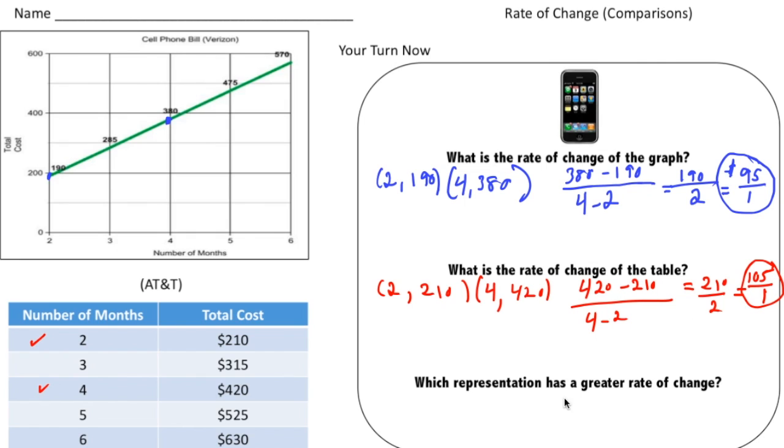According to our data, AT&T is a little more expensive than Verizon, so they have a greater rate of change. The answer for this one is going to be the table.